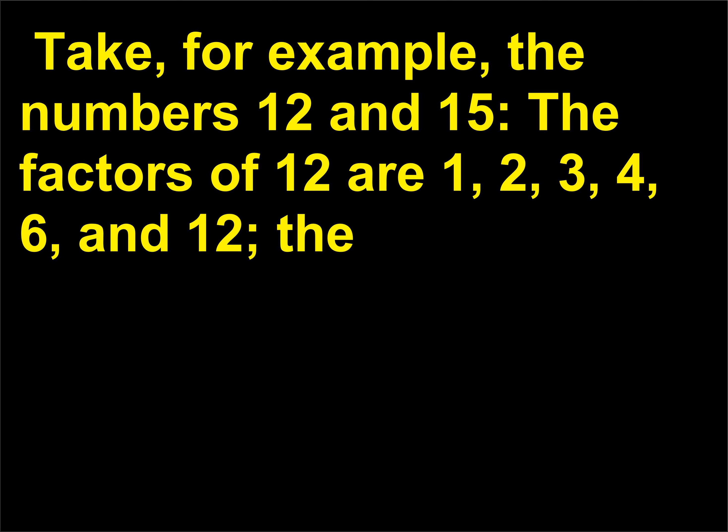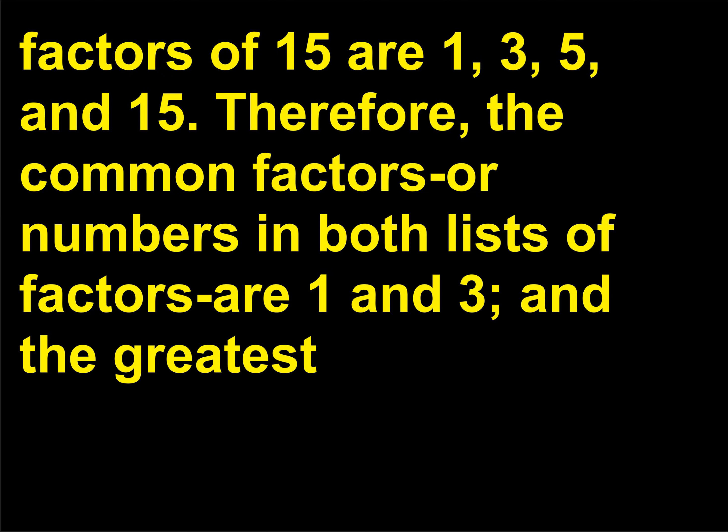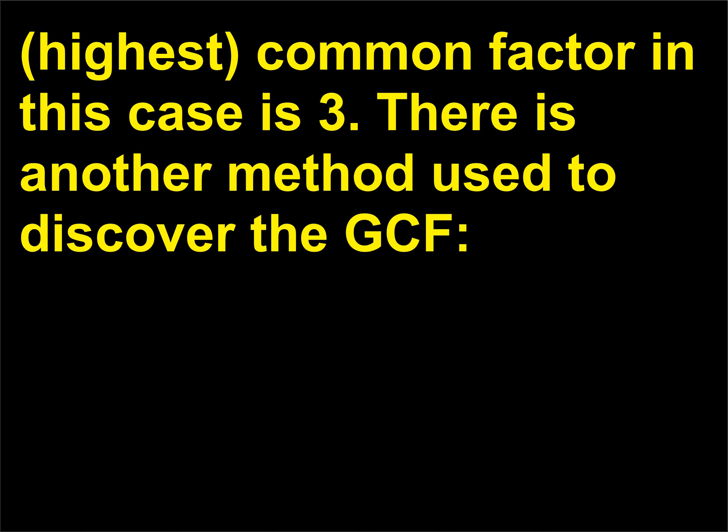Take, for example, the numbers 12 and 15. The factors of 12 are 1, 2, 3, 4, 6, and 12. The factors of 15 are 1, 3, 5, and 15. Therefore, the common factors — numbers in both lists — are 1 and 3, and the greatest, or highest, common factor in this case is 3.